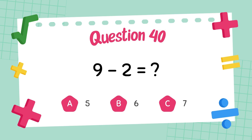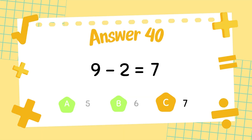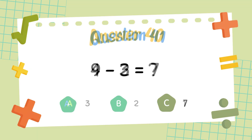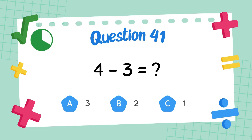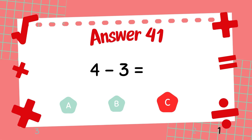What is 9 minus 2? The answer is 7. What is 4 minus 3? The answer is 1.